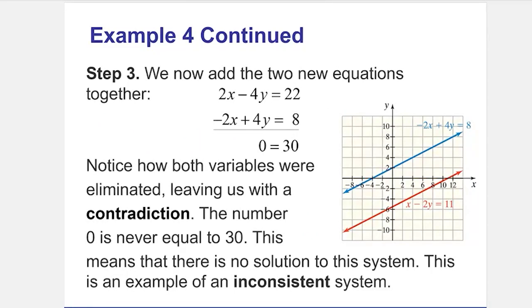Okay, so we saw the same thing. We added the two equations. We got zero equals 30. And we can see that both of the variables were eliminated. So we have a contradiction. Zero does not equal 30. This means there's no solution.